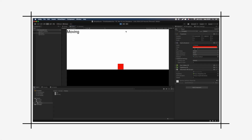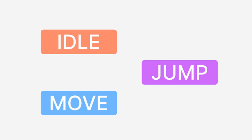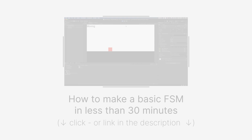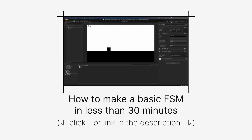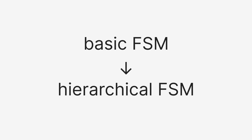In a previous tutorial we saw how to implement the state pattern in Unity. We designed a basic finite state machine for 2D player movement with two states: idle and moving. What we want to do today is improve this state machine to add a new jumping state. I'm going to build upon the last project, so you should definitely take a look at the first tutorial to get the same starting base.